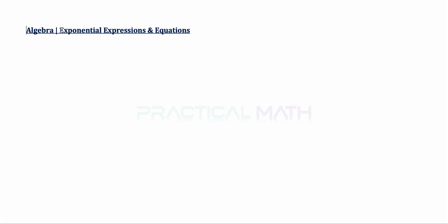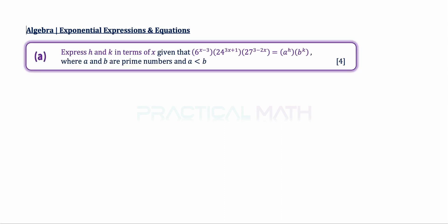The question in this video is about exponential expressions and equations. In part A, express h and k in terms of x, given that 6 to the power of x minus 3, multiplied by 24 to the power of 3x plus 1, multiplied by 27 to the power of 3 minus 2x, is equal to A to the power of h multiplied by B to the power of k.